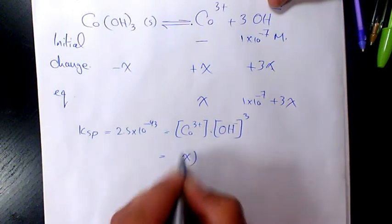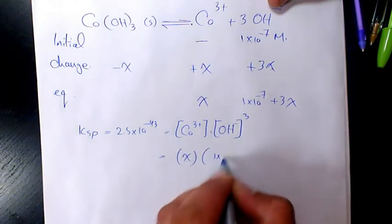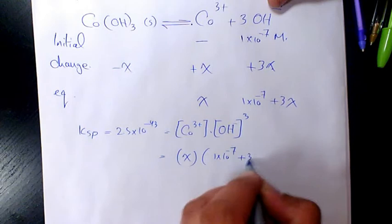So cobalt is x, OH is going to be 1×10⁻⁷ + 3x to the power of 3.